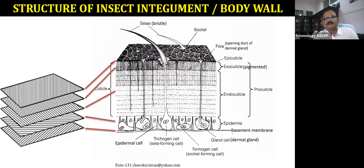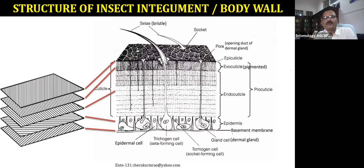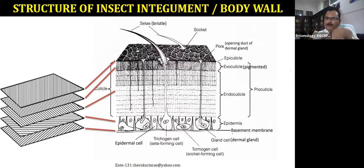The exocuticle and endocuticle together are called the procuticle — they are the largest layers. In the entire structure of the integument, out of all five layers: the basement membrane is very thin; the epidermal cells form a single-cell, living structure; then followed by endocuticle and exocuticle; and the epicuticle is very, very thin. So the topmost and bottom-most parts are very thin, and the biggest part is the procuticle, divided into exocuticle and endocuticle.